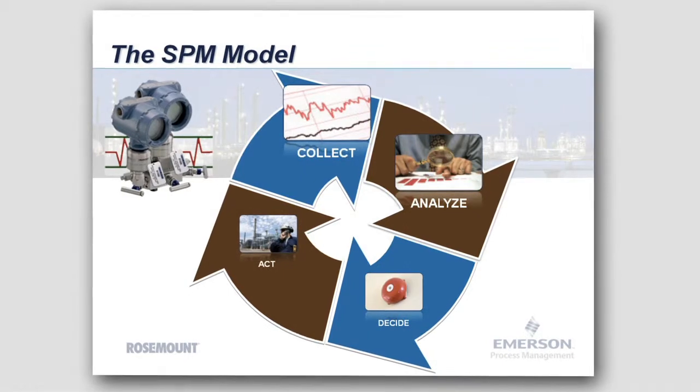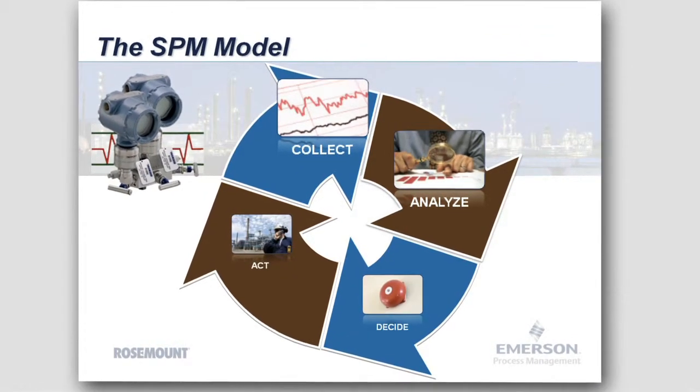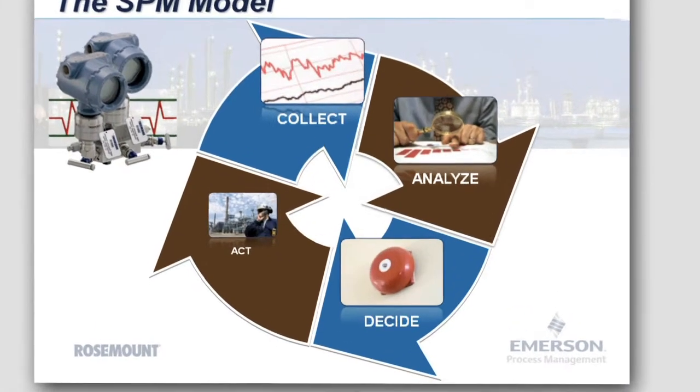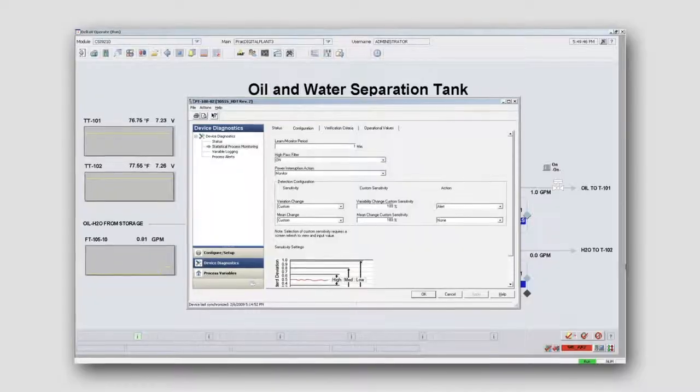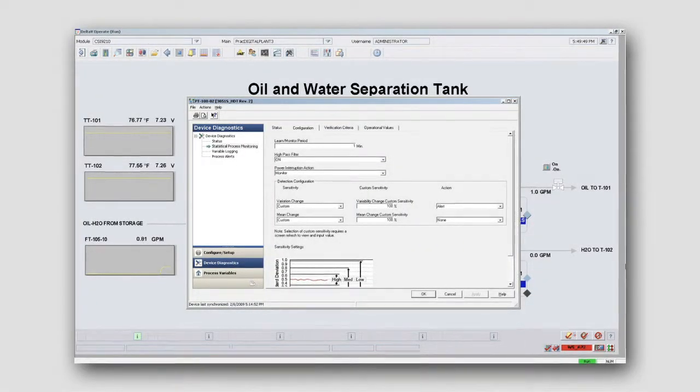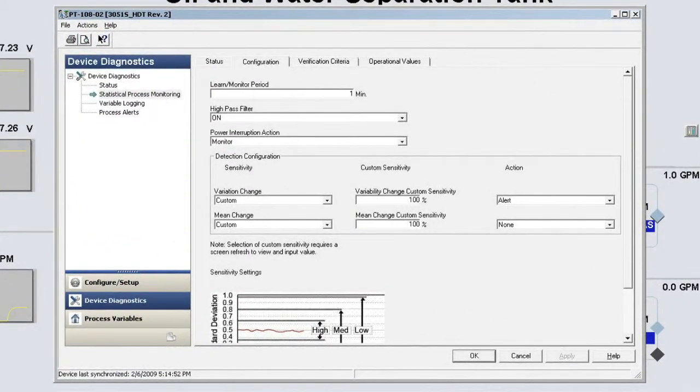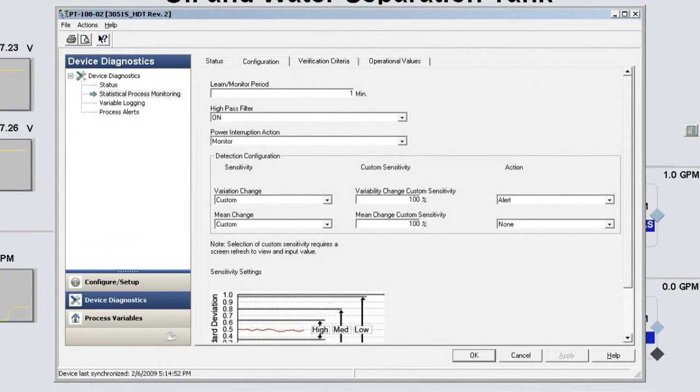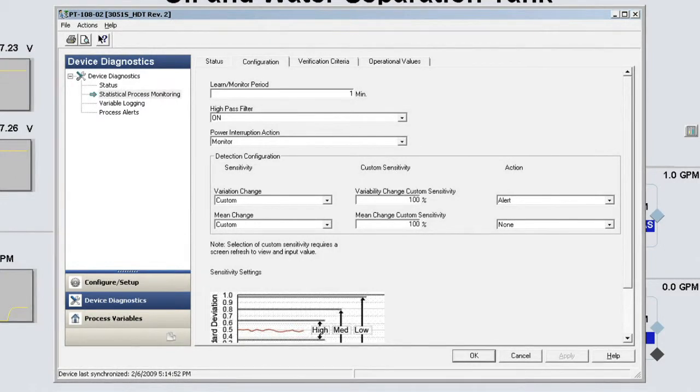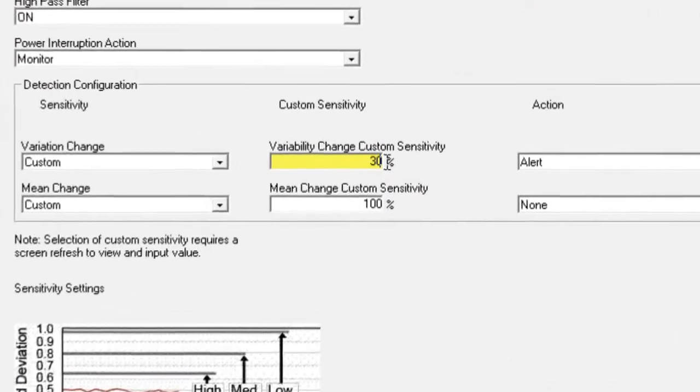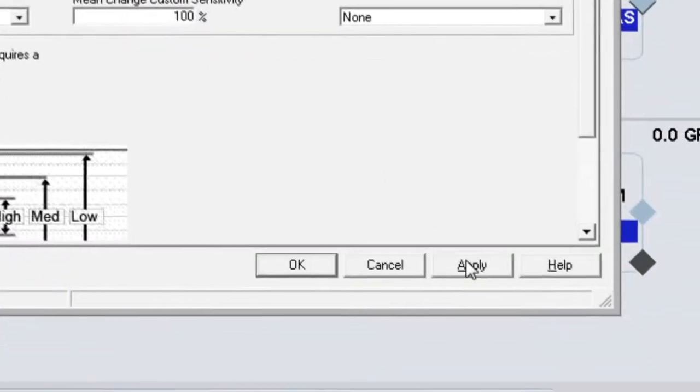Now that we understand where the baseline value is and how much the process variability reacted to the abnormal situation, the third step is to decide on the threshold limits. We can set the threshold limits by accessing the device with AMS Device Manager. Let's configure for an alert based on a change of no more than 30% in the process variability.